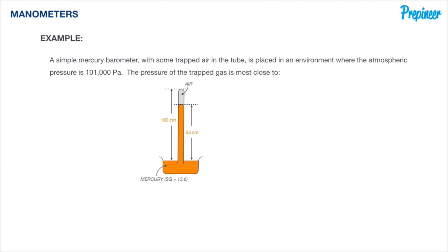A simple mercury barometer with some trapped air in the tube is placed in an environment where the atmospheric pressure is 101,000 pascals. The pressure of the trapped gas is most close to what?